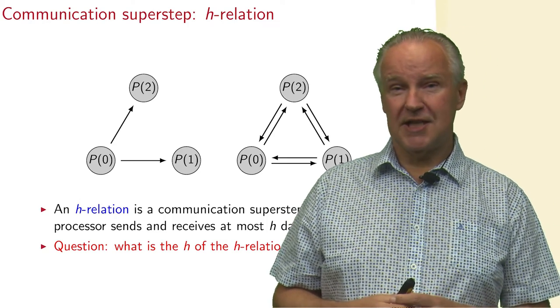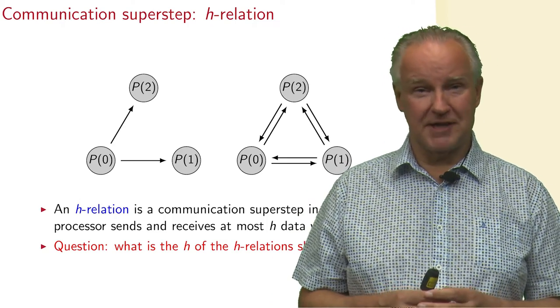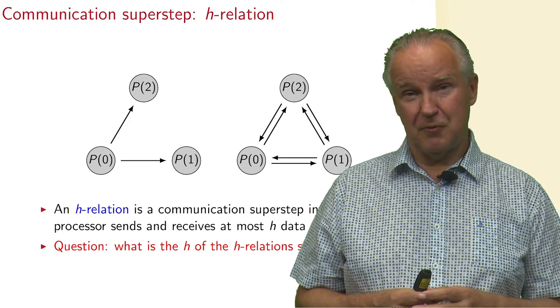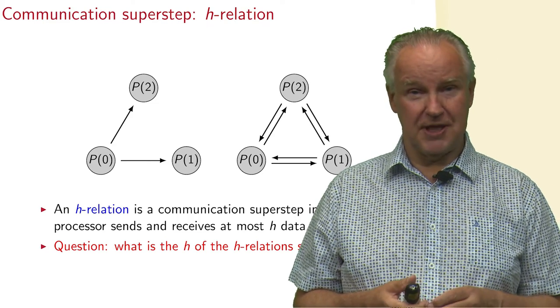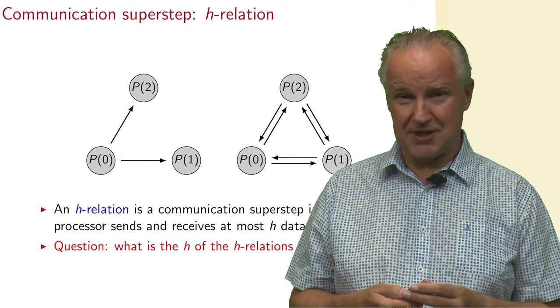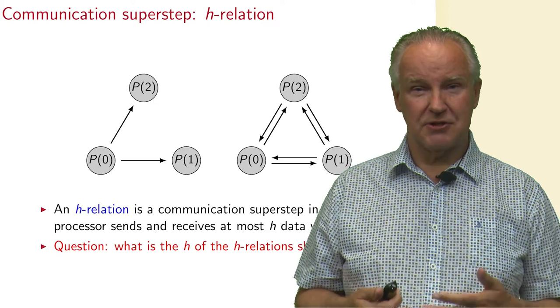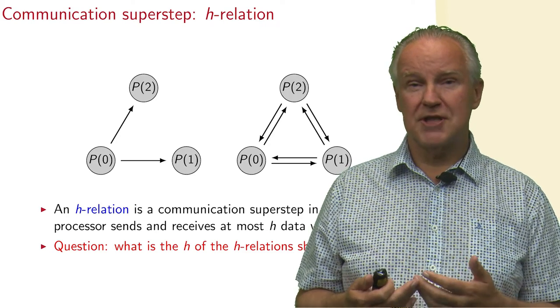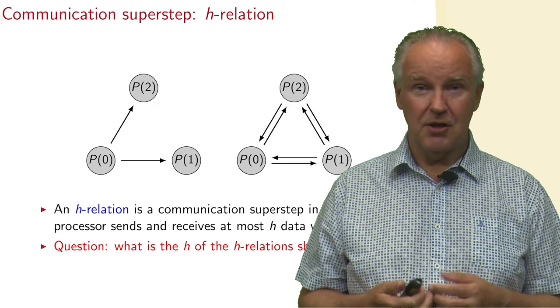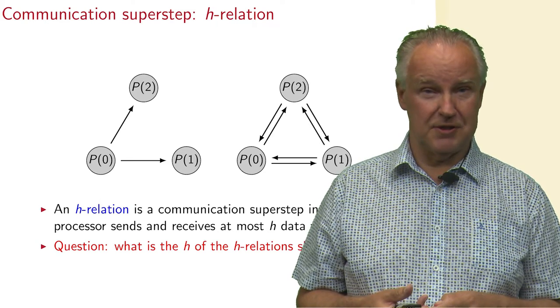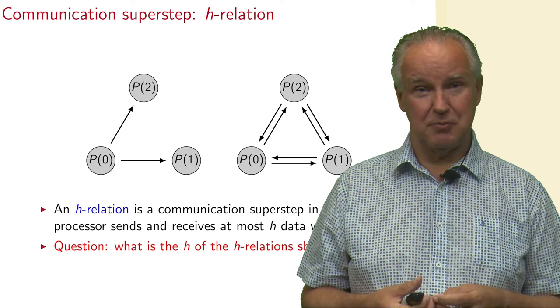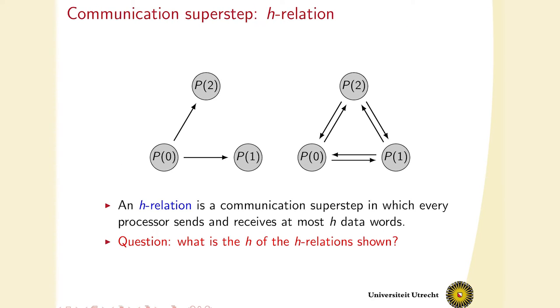Here we see a communication pattern, actually two patterns, and we want to assign a cost, a time that this takes. And we call that an h-relation. An h-relation is a communication super step, in which processors send and receive, but at most h data words. On the left side you see processor zero sends a data word to processor one, and also a data word to processor two. So, here's a question to you. What is the h of the h-relations shown on the left and on the right?